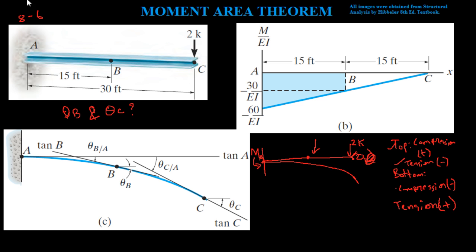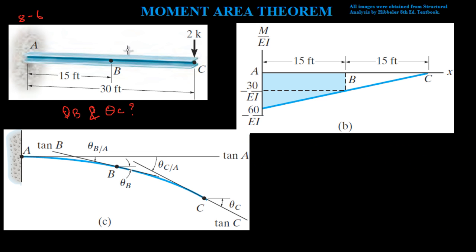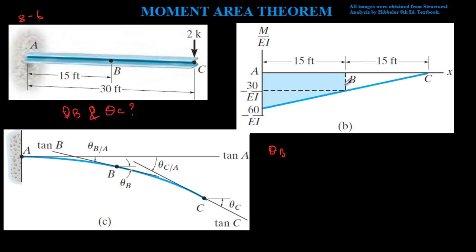Now we move on to the actual calculation — the easier part. Once the moment diagram is created, we apply the moment area theorem. We take the area under the M/EI diagram. To find theta B, we take the area between points A and B on the moment curve.